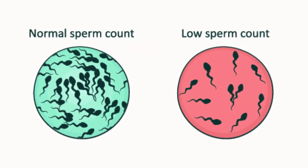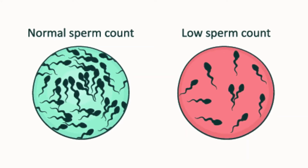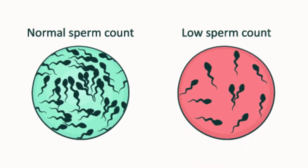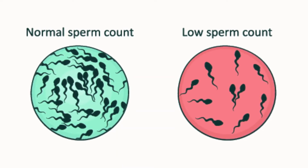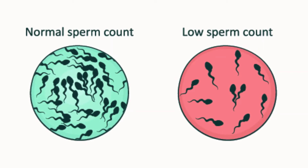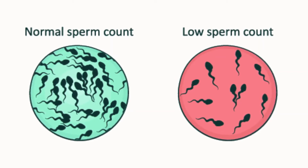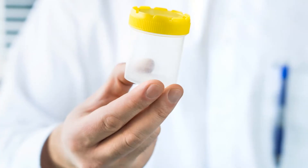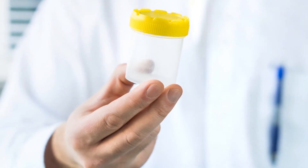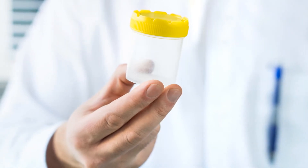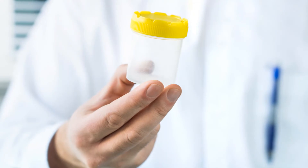Oligospermia is characterized by a sperm count that falls below the healthy range and is divided into three sub-categories: mild oligospermia, moderate oligospermia, and severe oligospermia. Azoospermia is defined as a sperm density of 0 million cells per milliliter. Around 5% of the male population is affected by this condition.